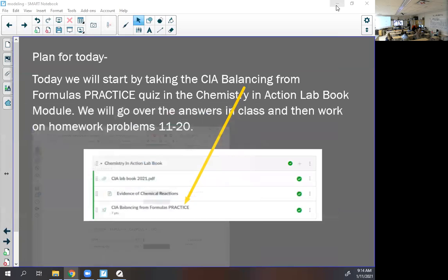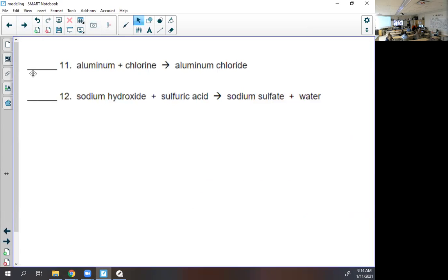The rest of the hour, we are going to work on problems 11 through 20 of your homework. These are the harder ones where you have to go from a name to a formula and then balance. So you'll need your naming schemata, your periodic table, you'll need your lab book, and you'll need a little bit of patience.